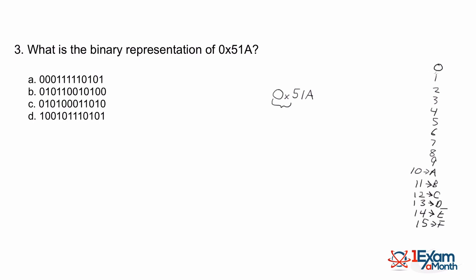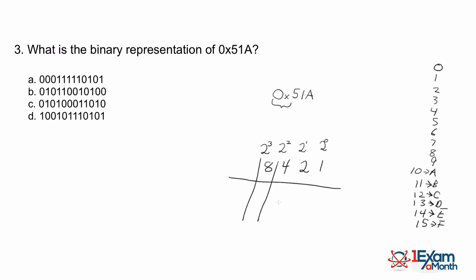Let's build a binary conversion chart. Starting with powers of 2: 2 to the power of 0 is 1, 2 to the power of 1 is 2, 2 to the power of 2 is 4, and 2 to the power of 3 is 8. So our binary conversion table has four columns: 8, 4, 2, and 1.